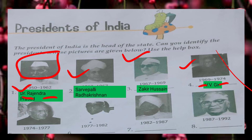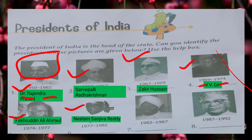In picture number 5, you have to identify. He was Fakhruddin Ali Ahmed and he was the fifth President of India. The next one is Neelam Sanjeeva Reddy. In picture number 7, Giani Zail Singh.